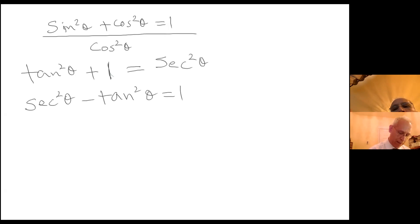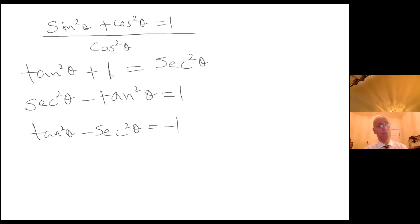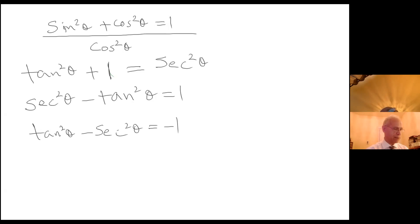Or you could claim that tangent squared of theta minus secant squared of theta equals negative one. At this level of math, we are expected to be able to play with these identities and get to different conclusions.